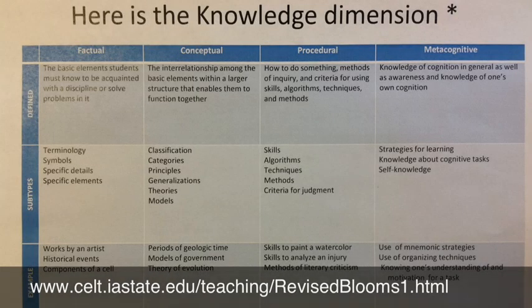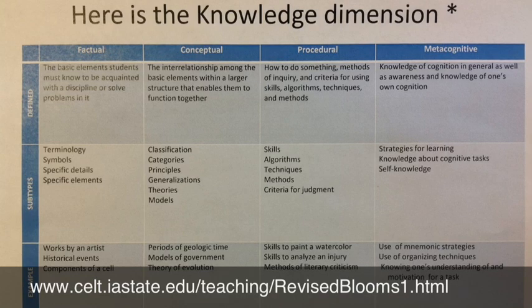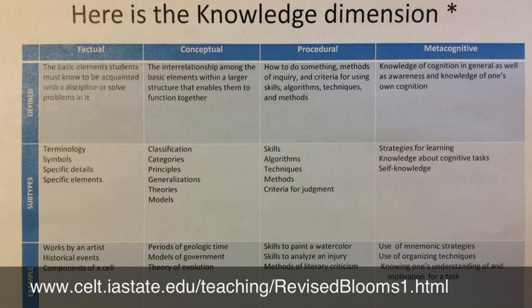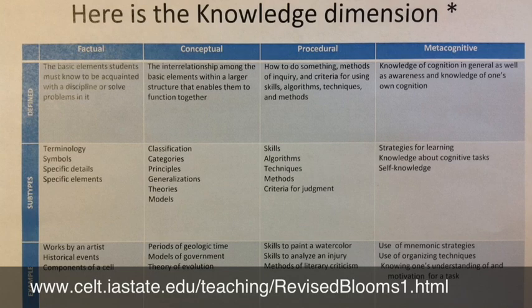Here's a nifty chart outlining the knowledge dimension. It's got some definitions of the terms, some subtypes, and also some examples on the bottom. It's originally accessed from the URL you see at the bottom of your screen. If you go there now, you're going to see their super fancy updated version, which is worth a look. I also invite you to pause the video to have a look at this version.